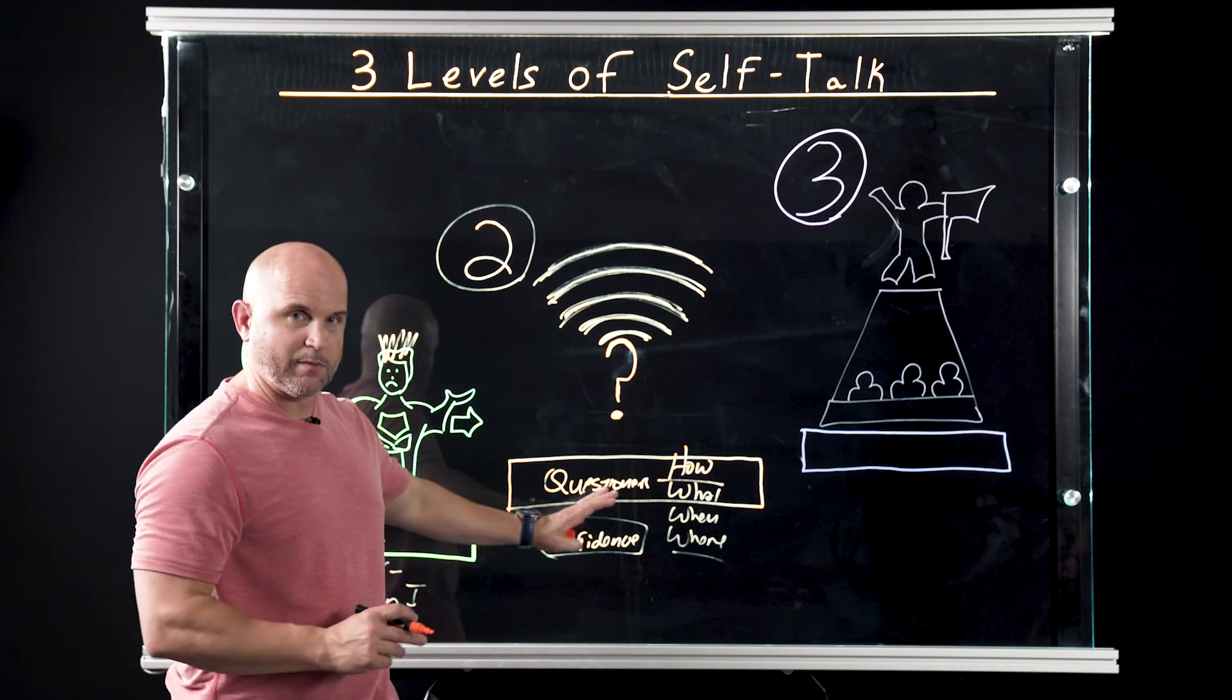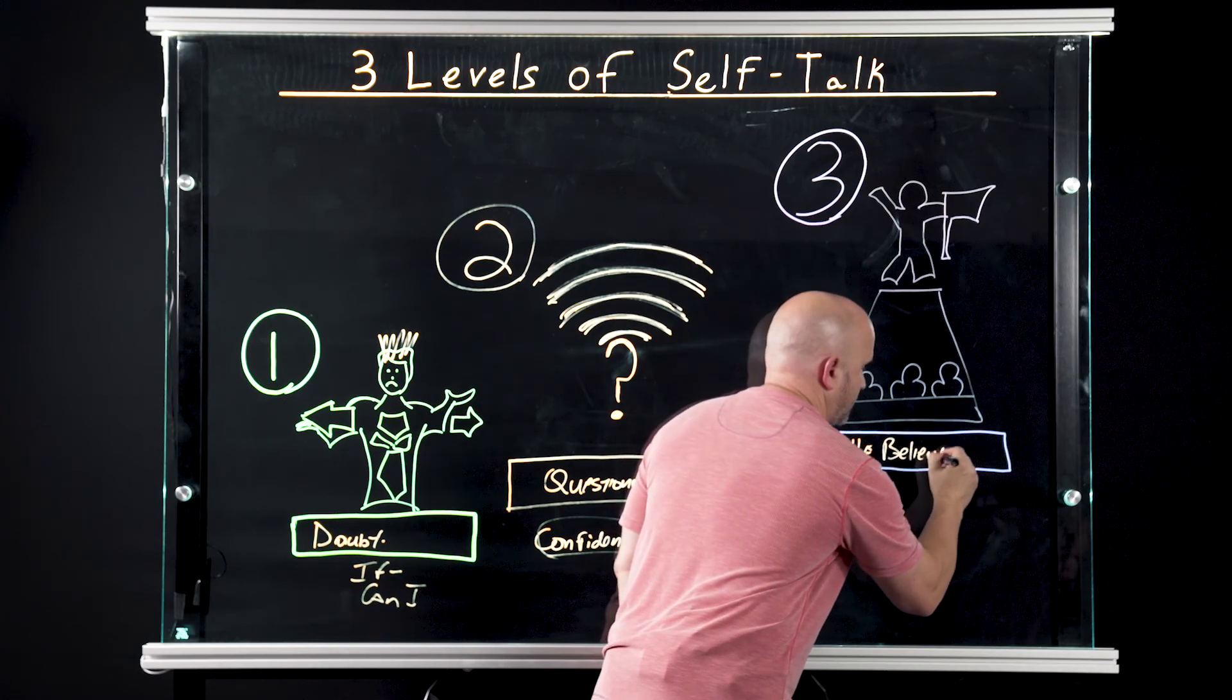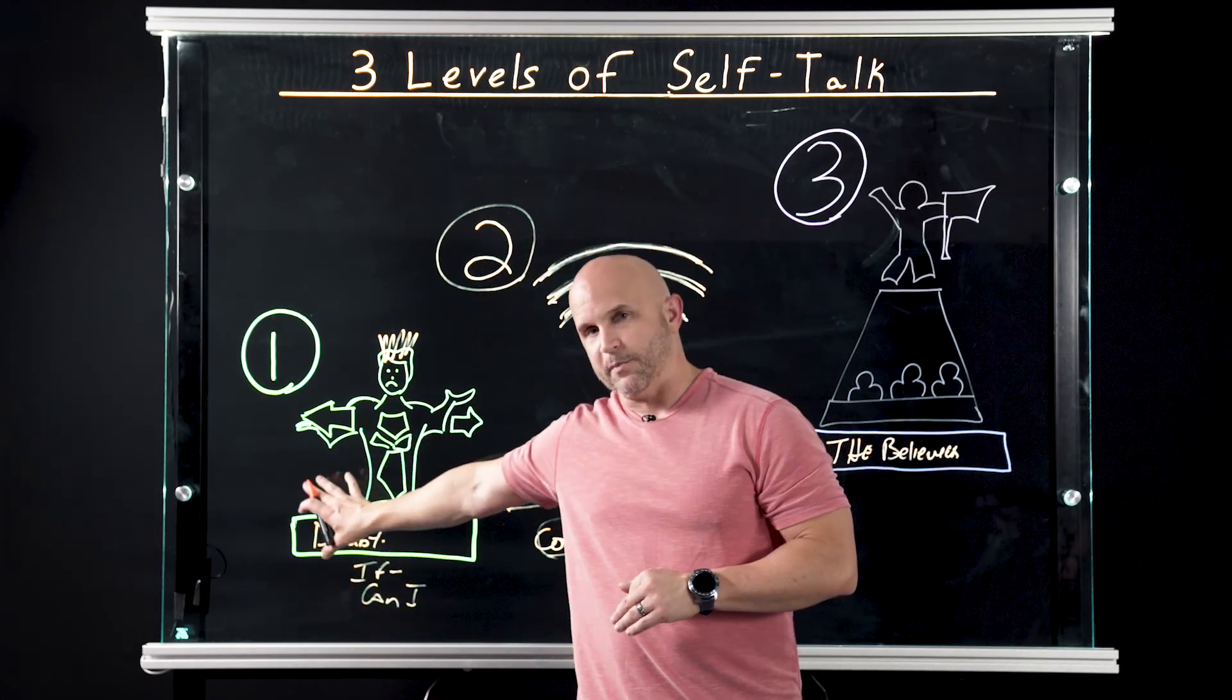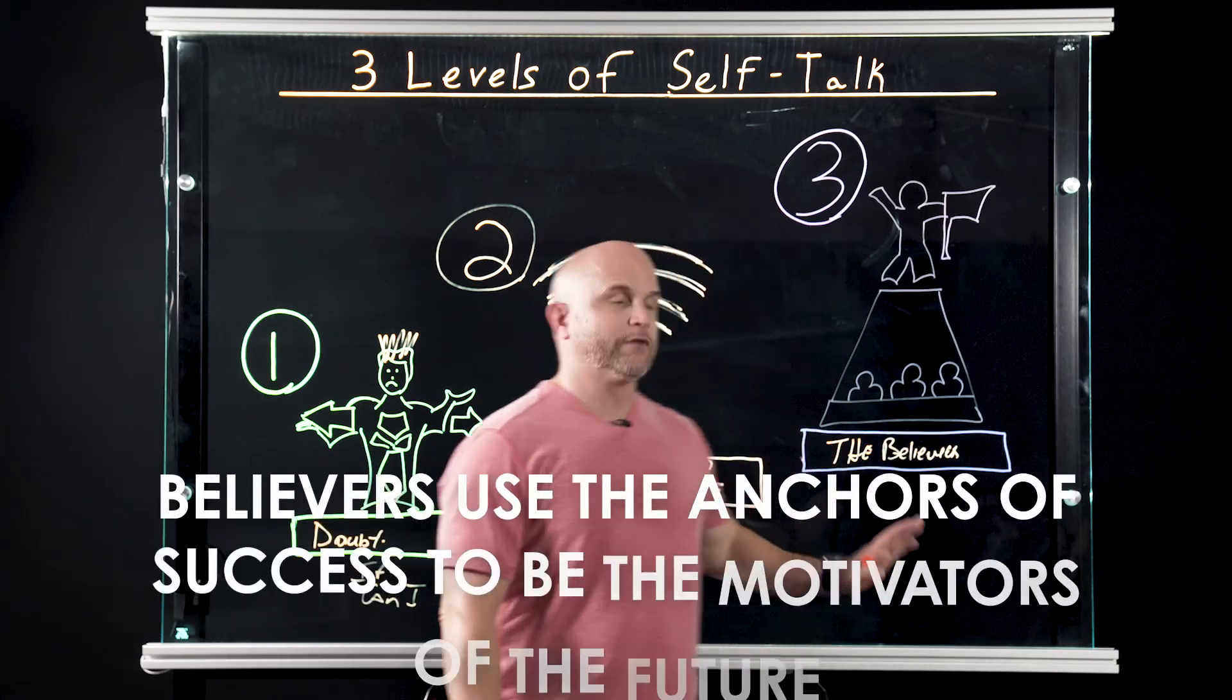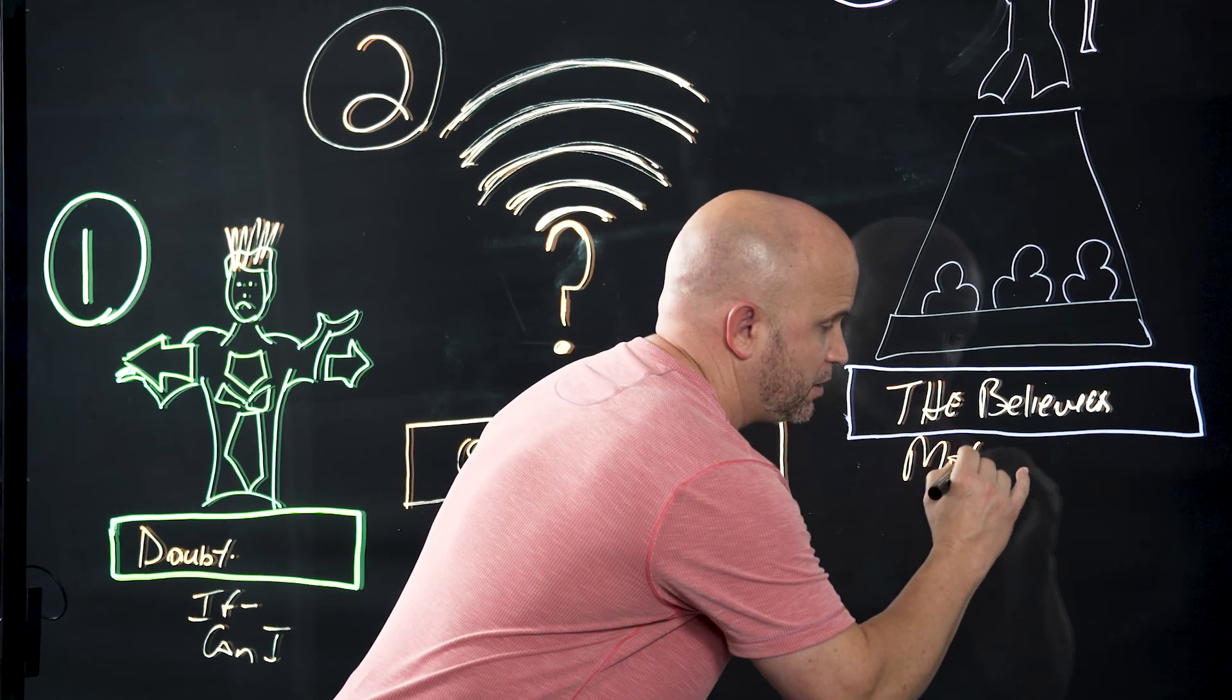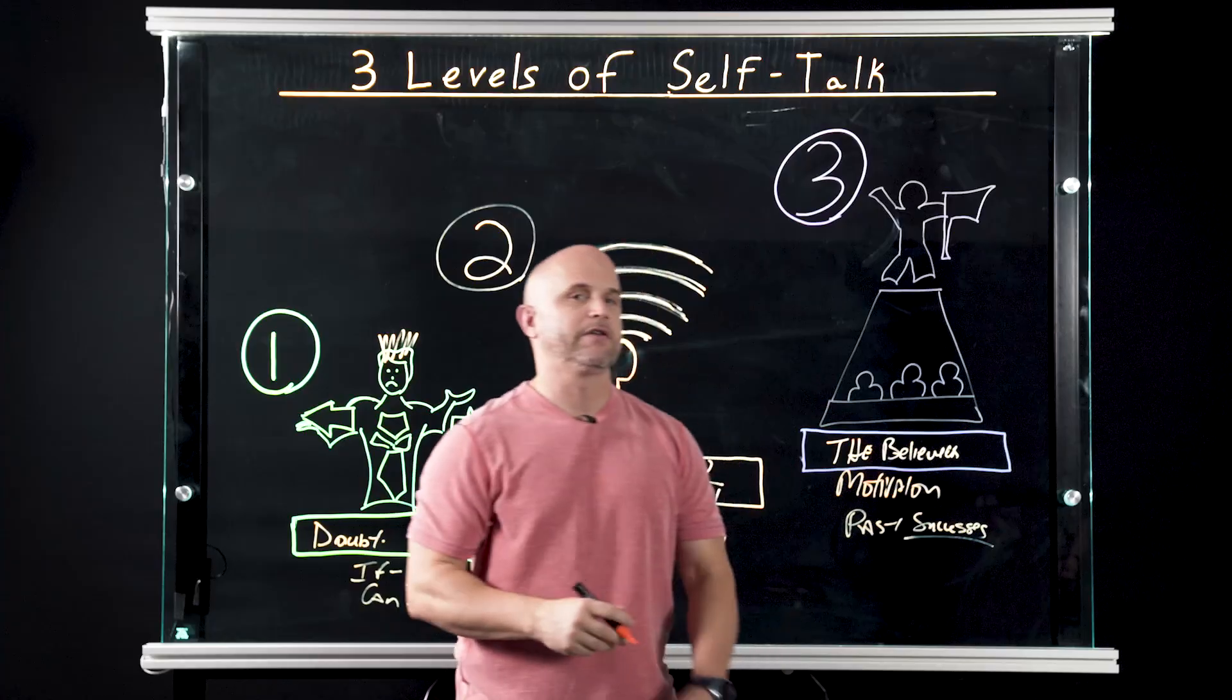So this is the transition we're trying to make, which takes us to the third one, which is the believer. Believers have built confidence over time, and what the believer does, differently than the doubter, the doubter uses the past in an effort to try to predict the future, where the believer uses the anchors of success to be the motivators of the future. So motivation comes from past successes.